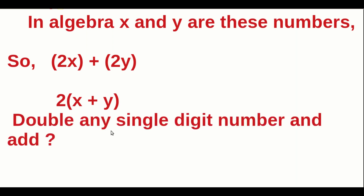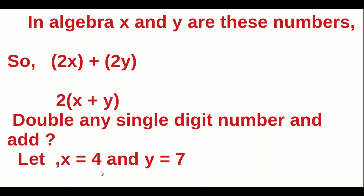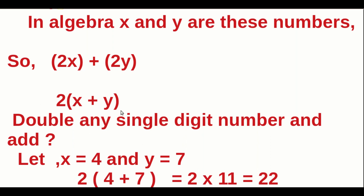We can take a general equation for doing this type of question. Let X equal 4 and Y equal 7. Instead of X we substitute 4, and instead of Y we substitute 7. Then 2 into 4 plus 7 gives us 2 into 11, which equals 22. This is the use of Algebra.